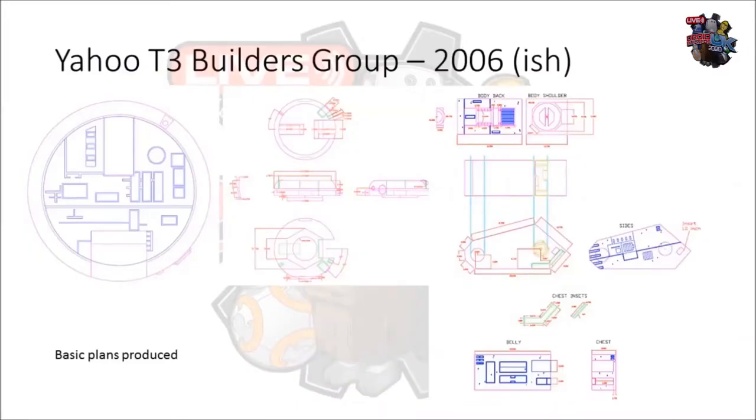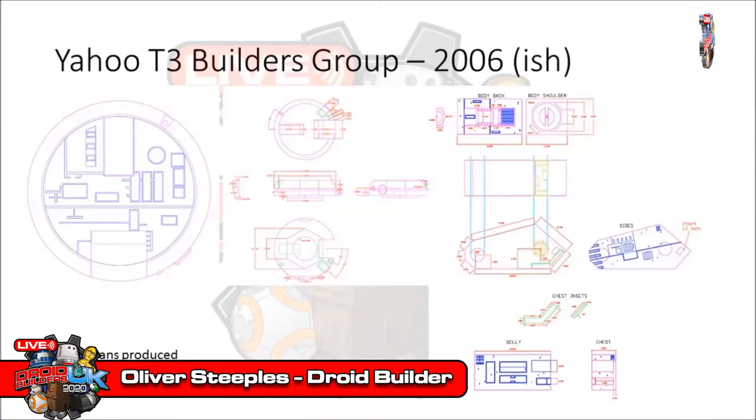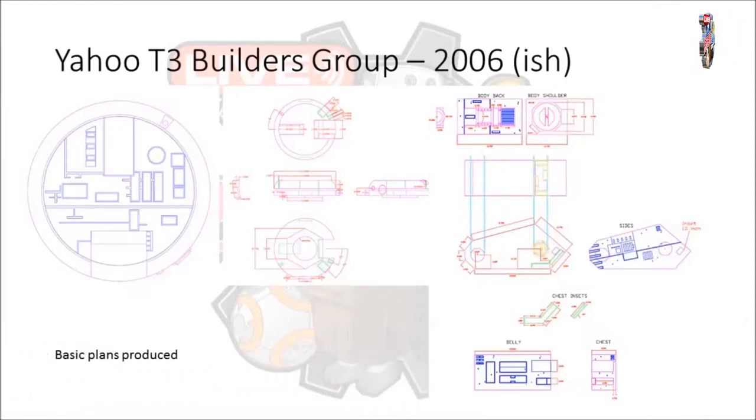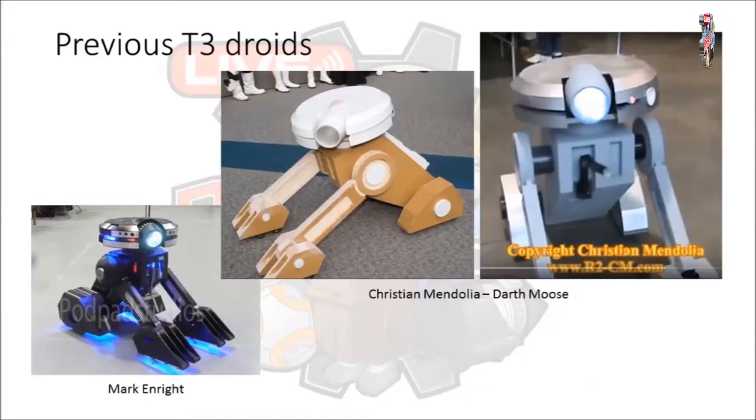In around 2006 the T3 builders group was formed on Yahoo as a mailing list. Like today they ripped the meshes from the game and produced PDF, DXF plans as you can see on the slide.